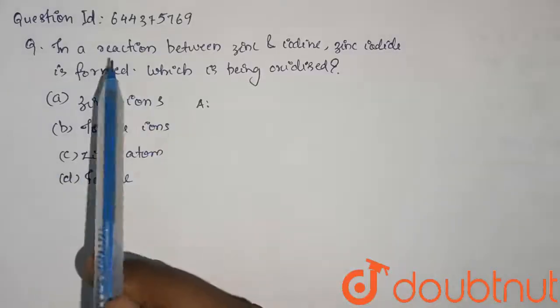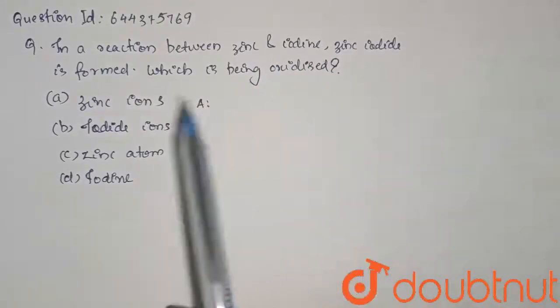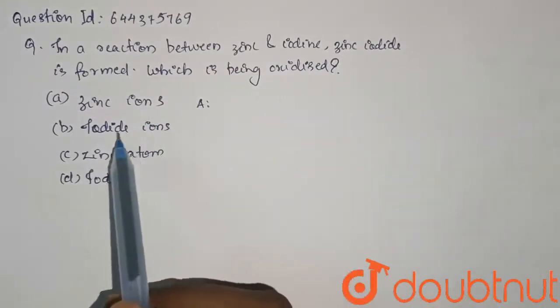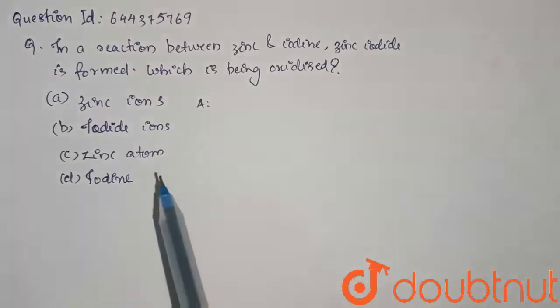The question here is, in a reaction between zinc and iodine, zinc iodide is formed. So which is being oxidized? The options are zinc ions, iodide ions, zinc atom or iodine.